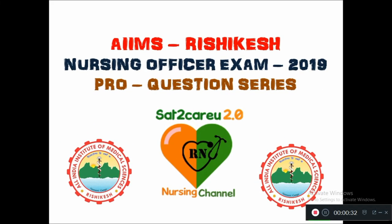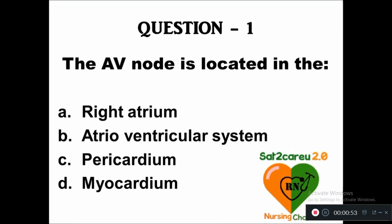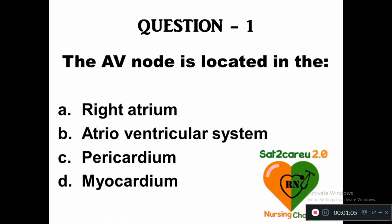Welcome to Sato Carry 2.0 online nursing channel. Please subscribe before seeing these questions. Question 1: The AV node is located in — option A: right atrium, B: atrioventricular system, C: pericardium, D: myocardium. The right answer is right atrium.